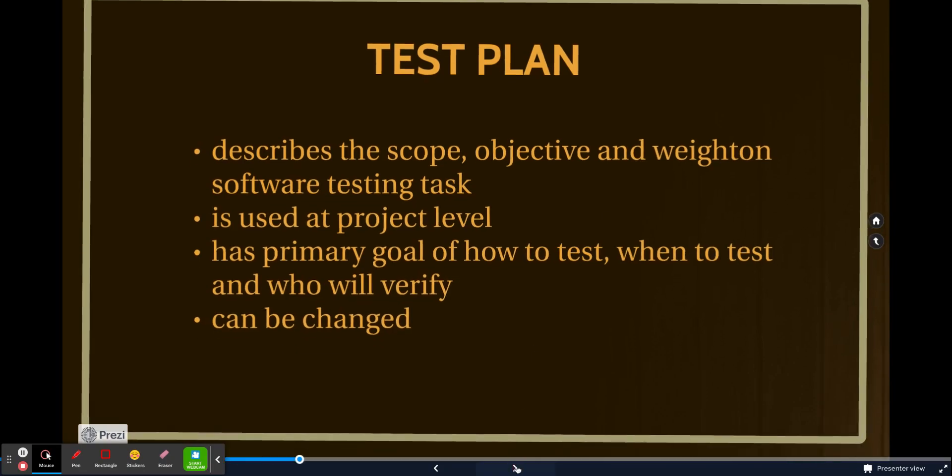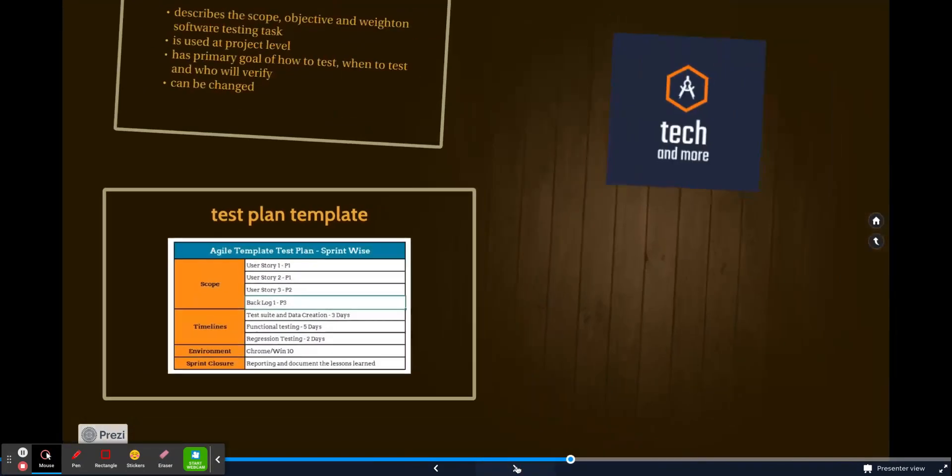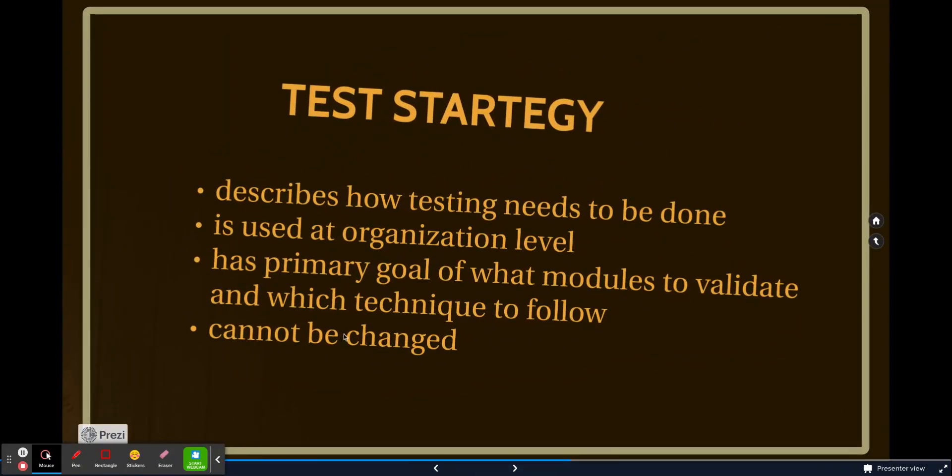Now let's jump on to the next thing, that is test strategy. So if you can see on the screen, it says describes how testing needs to be done, is used at an organization level. Basically, it is the extreme opposite of test plan. Then has primary goal of what modules to validate and which techniques to follow, and it cannot be changed.